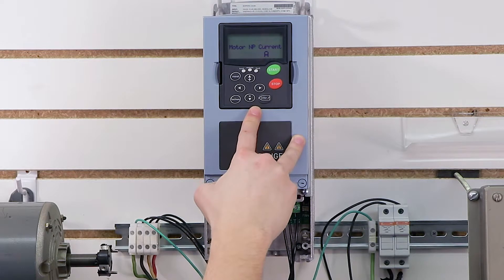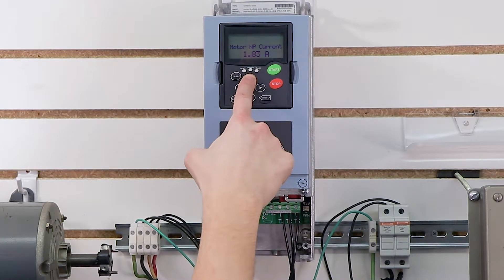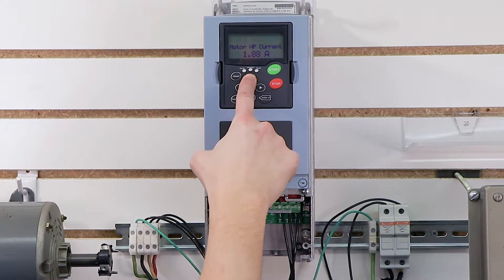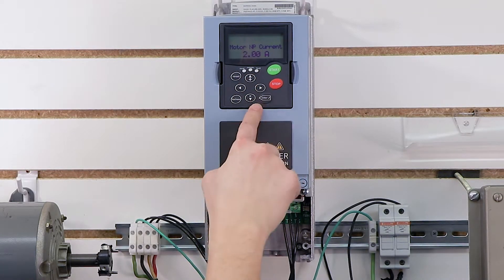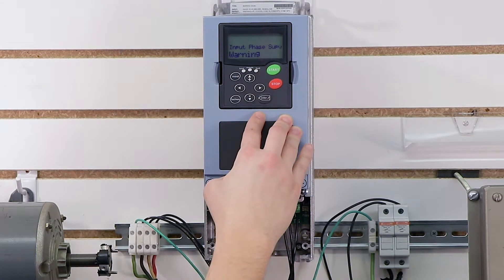And now here's my motor nameplate current. This is where I'm actually going to set my motor's current. So again, this is different than your overload. This is so the drive knows both your motor's current and your overload setting. Press enter again.